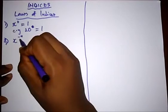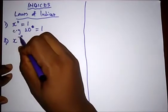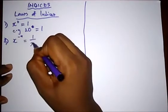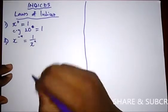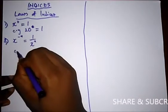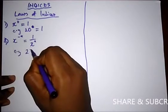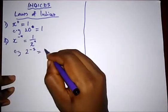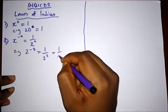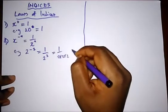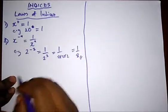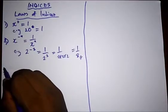Another law: when you have a number raised to a negative power — for instance, x raised to the power minus a — you get one over the number raised to the positive power. For example, two raised to the power minus three equals one divided by two raised to the power three, which is one over two times two times two, giving you one over eight.